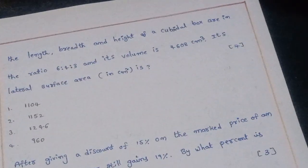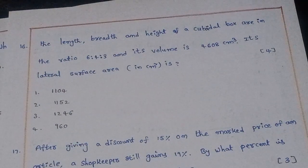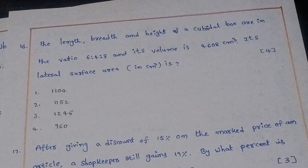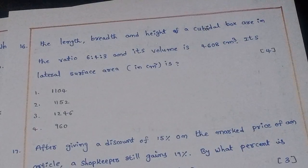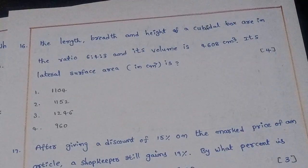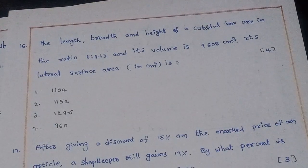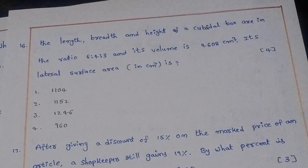Sixteenth question: The length, breadth, and height of a cuboid box are in the ratio 6:4:3 and its volume is 4608 cm³. What is its lateral surface area in cm²? The right answer is option 4: 960 cm².